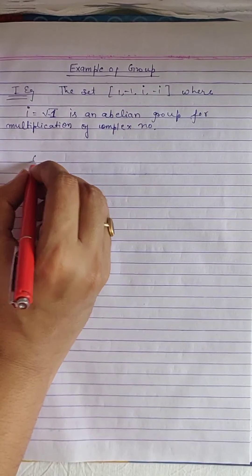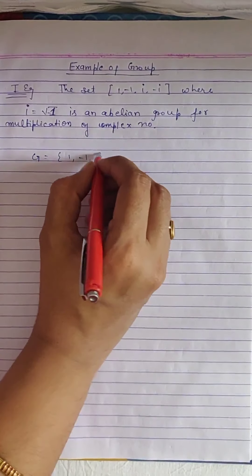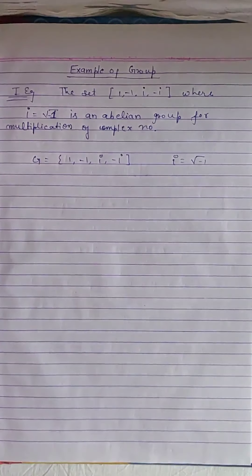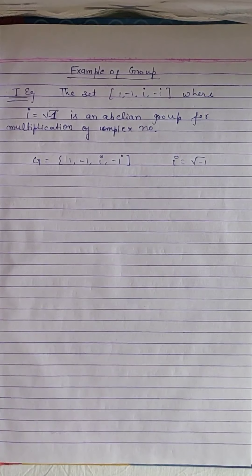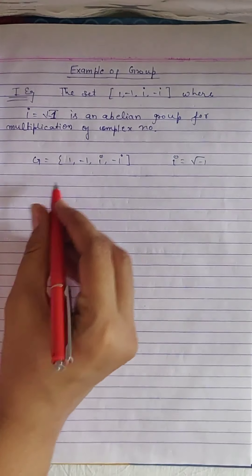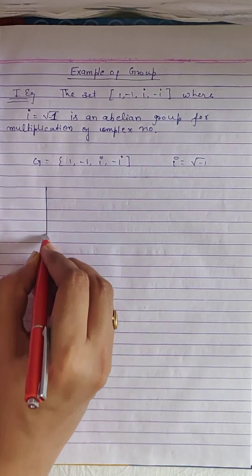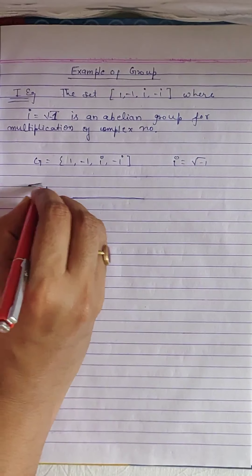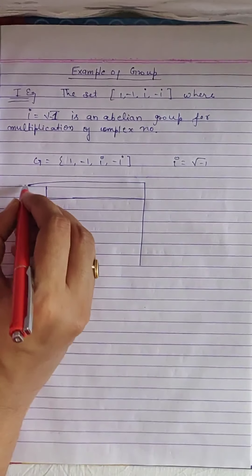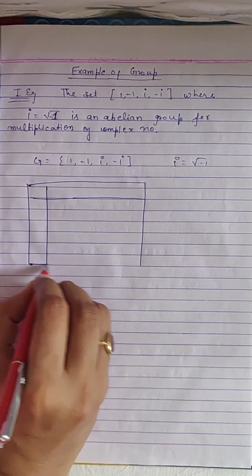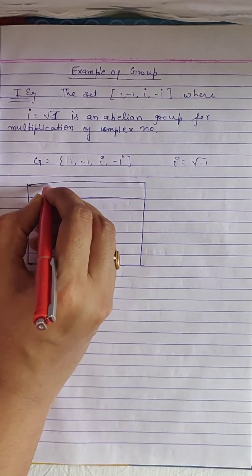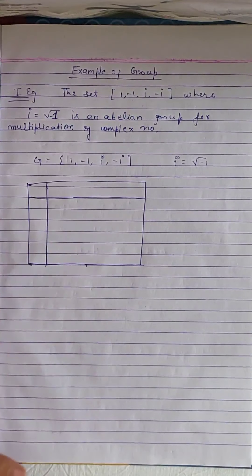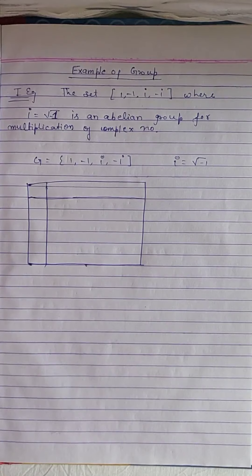We have G = {1, -1, i, -i}, where i = √(-1). Now, first of all, if the number of elements in a given set is finite — like 4 or 5 — then we can easily see these elements in a table. We can easily see whether the group properties are satisfied or not. This table we call the Cayley table.